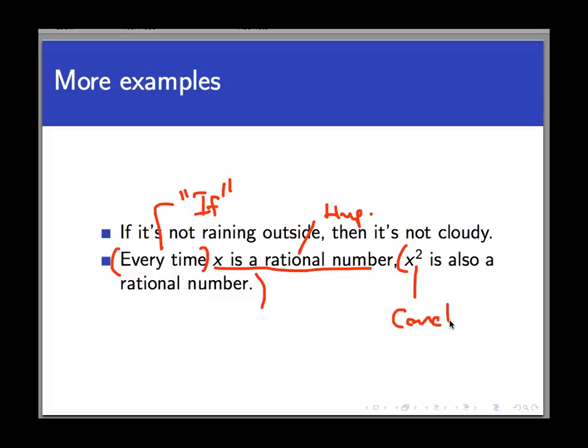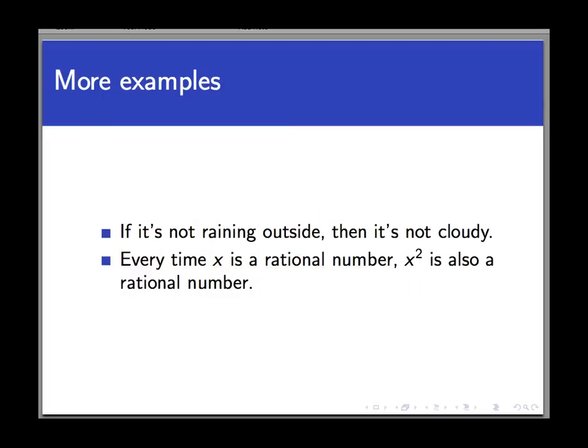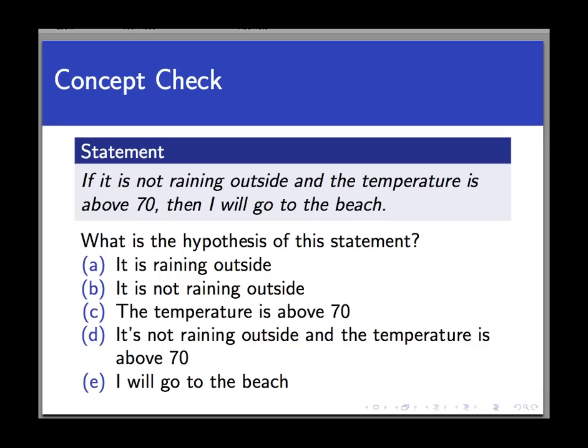Here's another one that's a little more complex. And although it's complex, we're going to do this as a concept check. So as with all the concept checks, listen to the question and the responses, and then pause the video while you decide which response is most correct. Here's a conditional statement: If it is not raining outside and the temperature is above 70, then I will go to the beach.